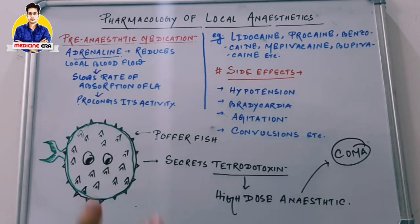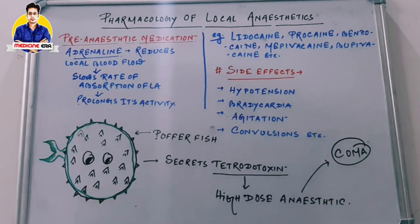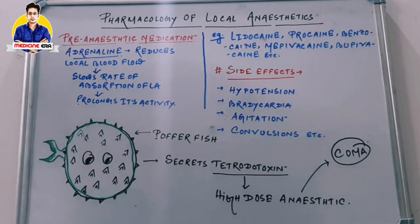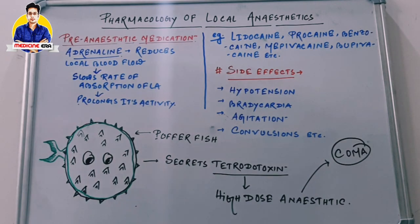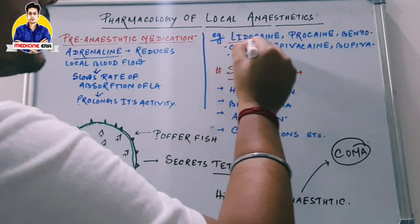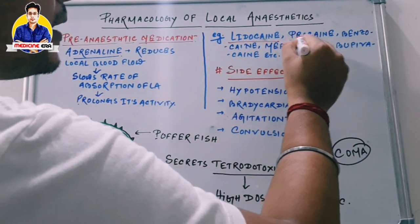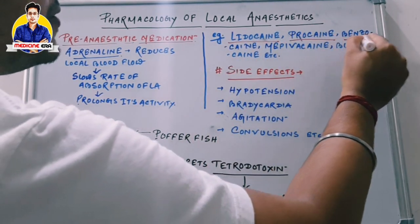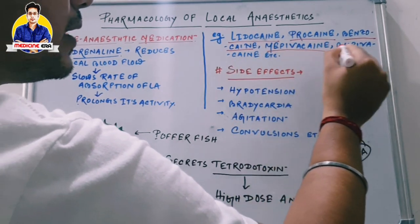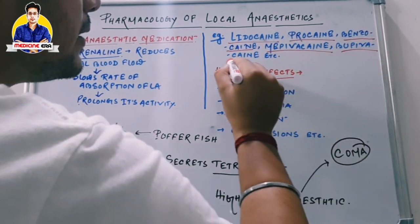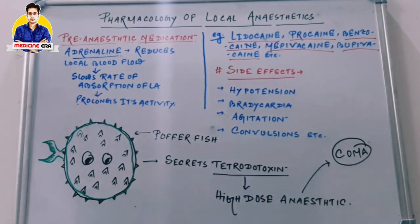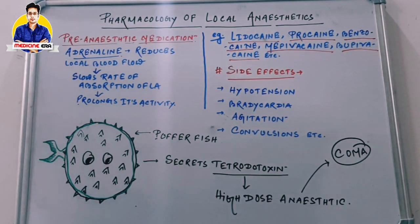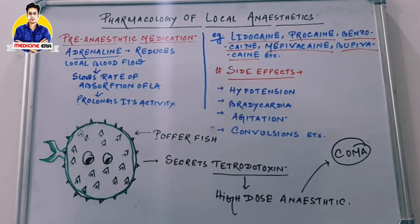Examples of local anesthetics include lidocaine, procaine, benzocaine, mepivacaine, and bupivacaine. These drugs are used as local anesthetics for various purposes, including surgery.